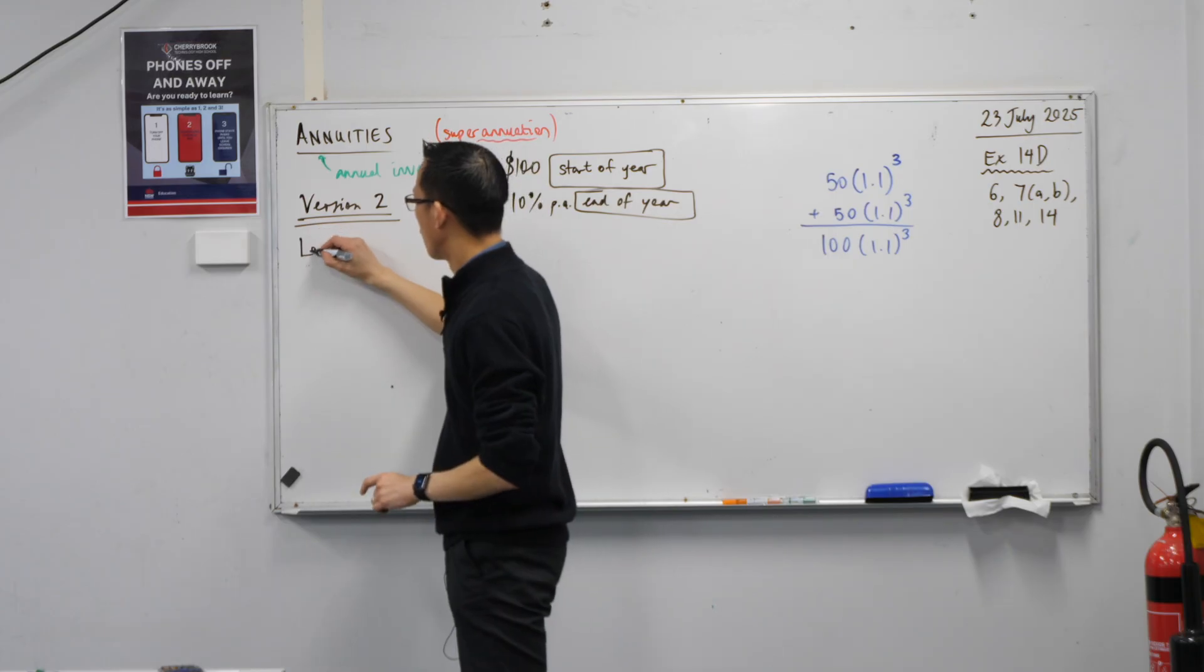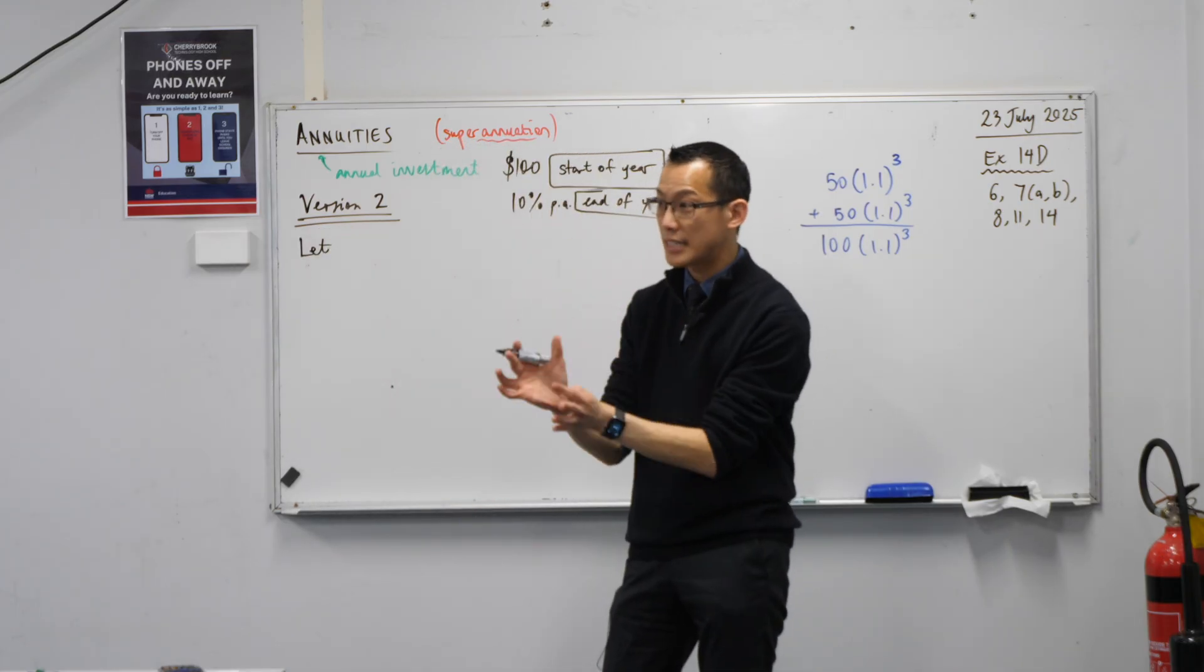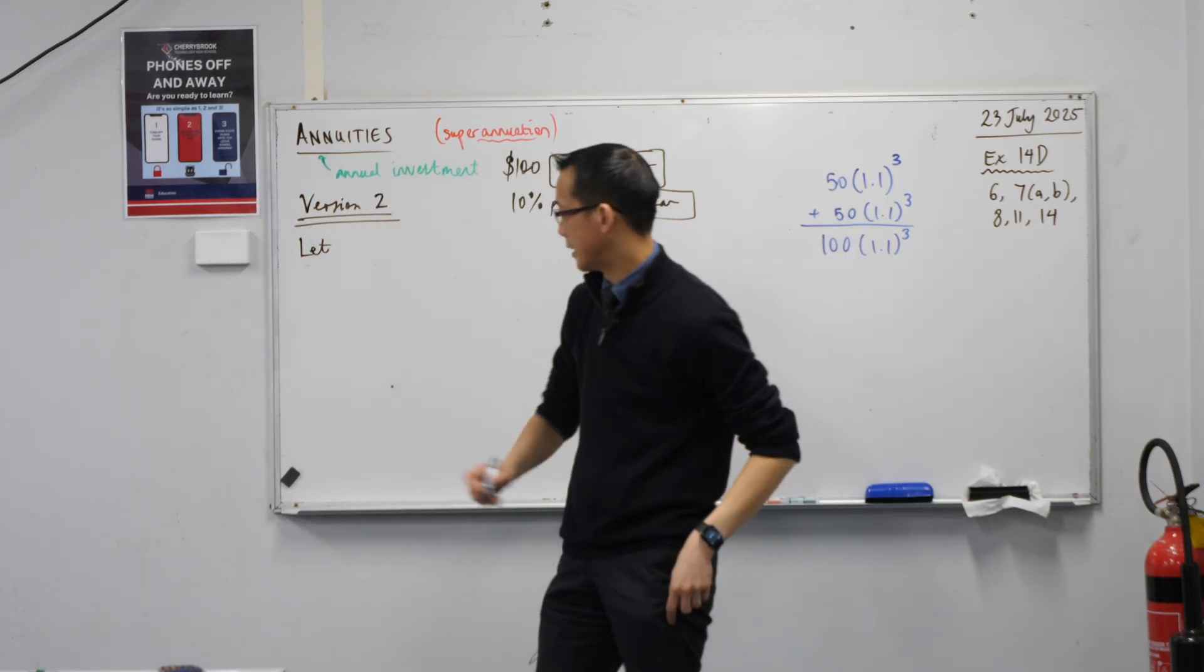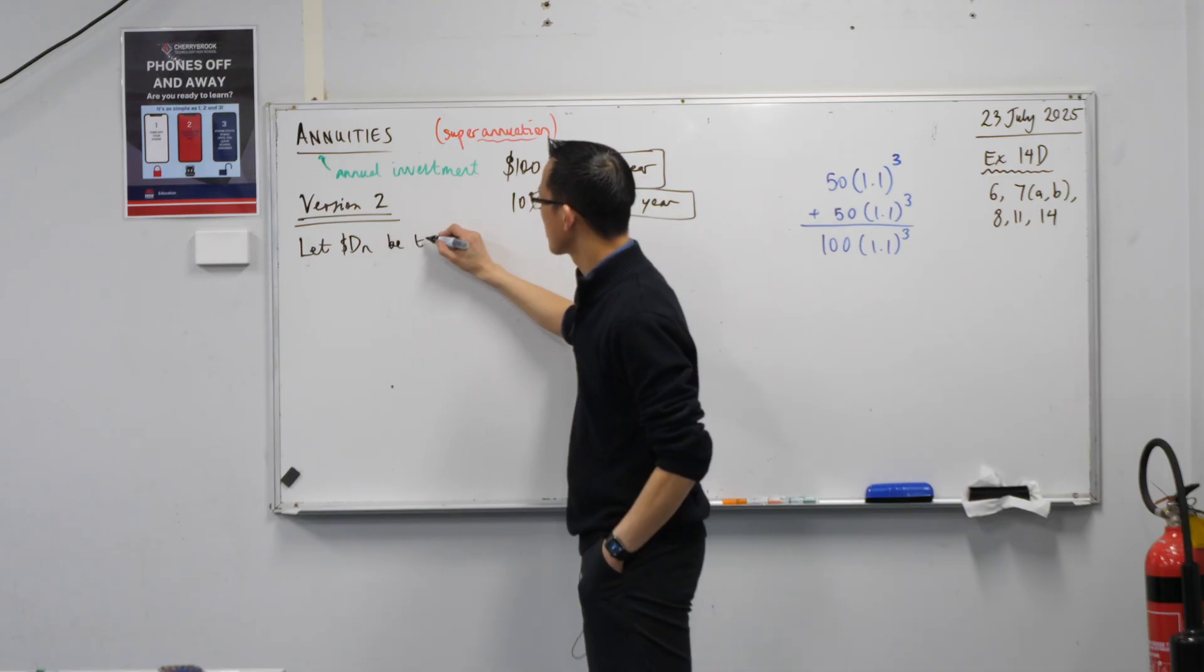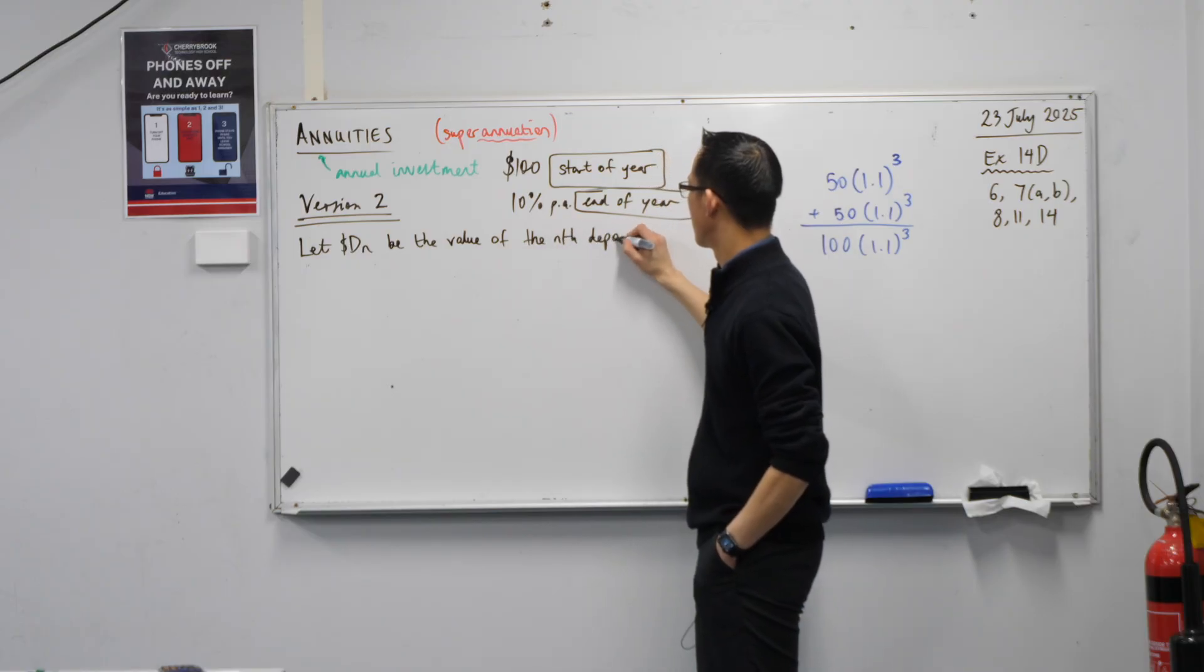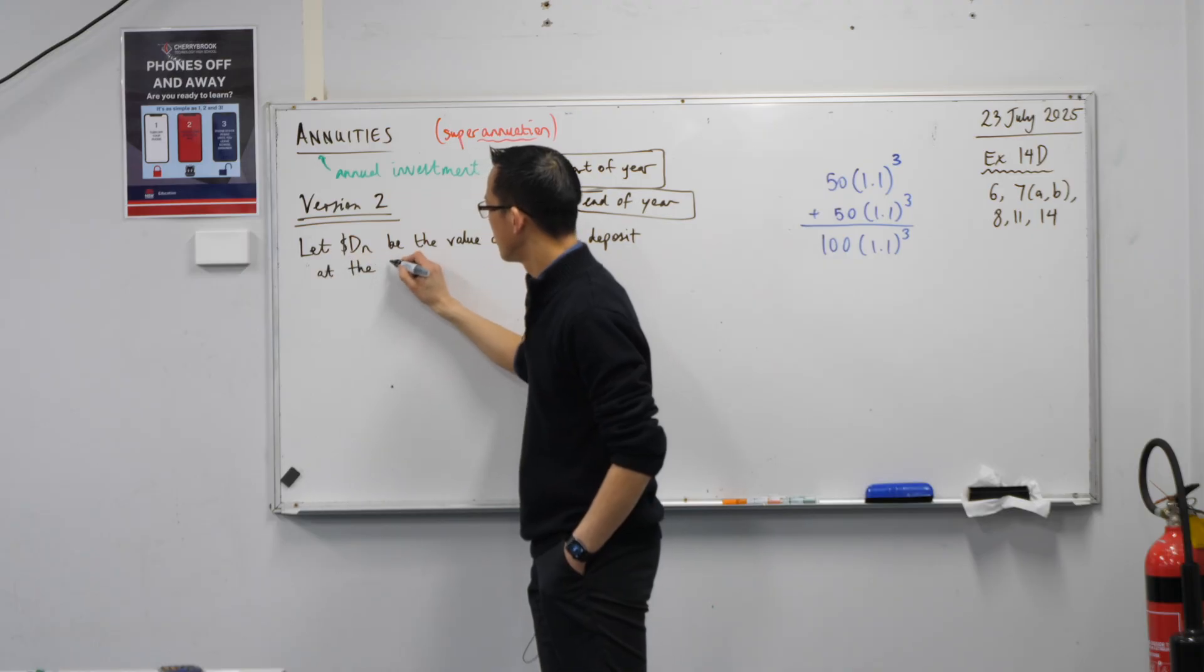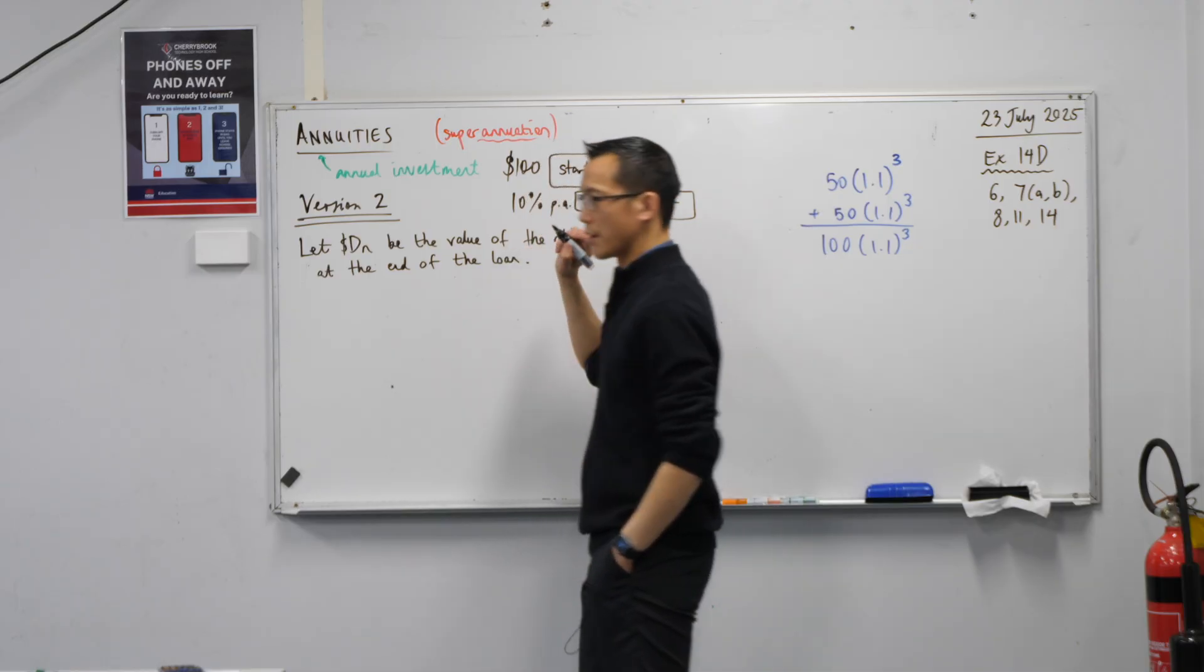So what we're going to do, just like before, is we need to define our terms. Now we're doing something different here, right? We're not considering the whole lot, we're considering every deposit separately. So I'm going to say, let D, and I'll put a dollar sign out the front actually, be the value of the nth deposit at the end of the loan.